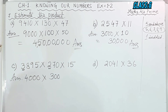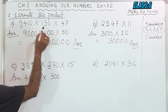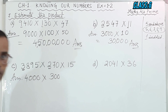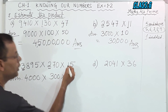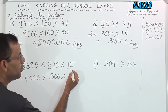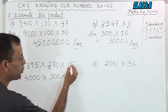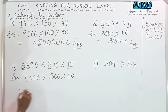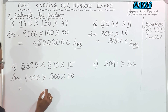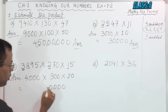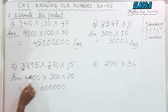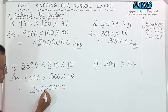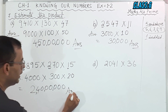Now for the third number, 15: since 5 is 5 and above, 1 is added. So we put 0 and 1 becomes 2, giving 20. Now we multiply: there are 6 zeros — 1, 2, 3, 4, 5, 6. Then 4 into 3 is 12, and 12 into 2 is 24. So we write 24 followed by 6 zeros, put the commas, and this is the answer.